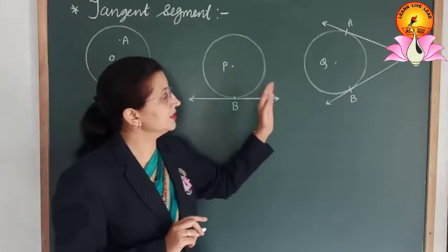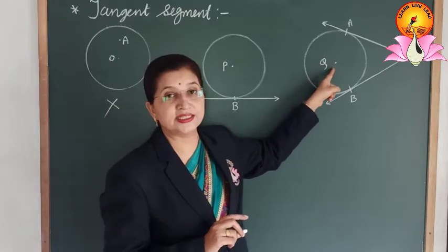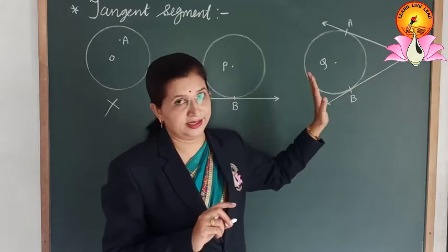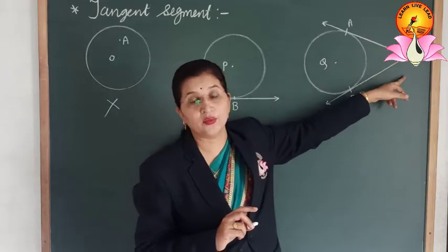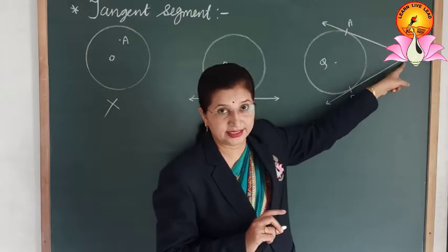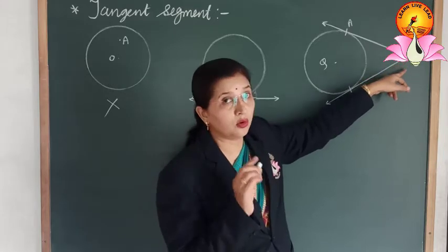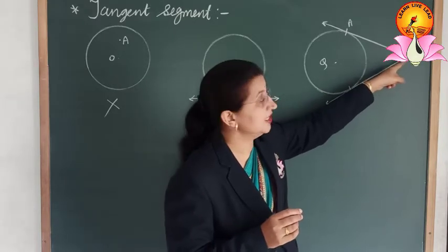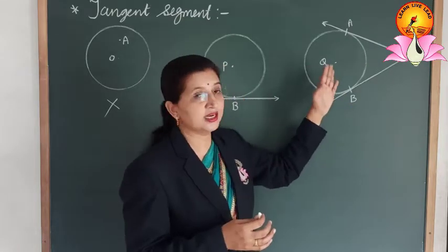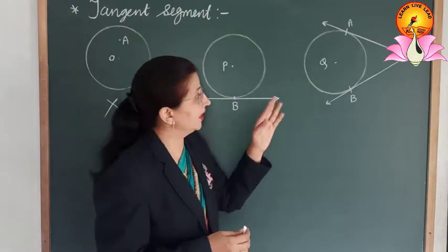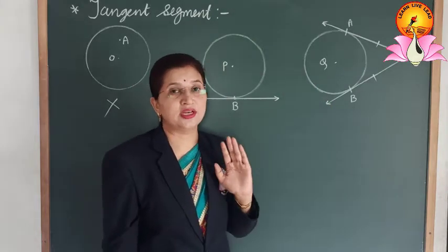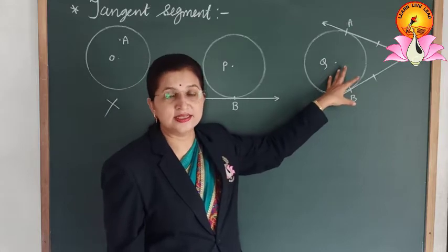In the third figure, there is a circle with center Q and point C is exterior to the circle. From this exterior point C, we can draw two tangents to the circle — tangent CA and tangent CB. From an exterior point, we can draw two tangents, and each of these tangents can be called a tangent segment. We are going to learn the theorem related to this tangent segment.